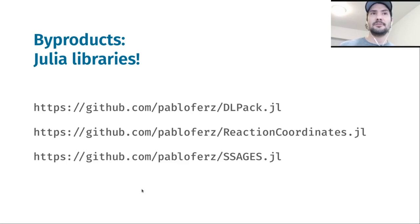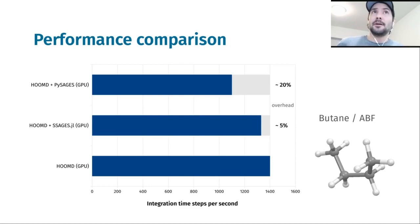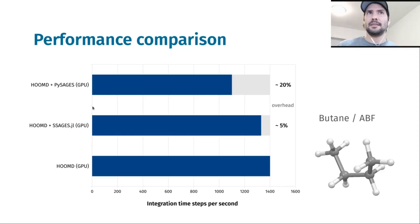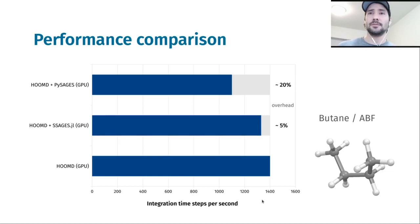Let me now talk a bit about the performance comparisons between the code developed with Python and JAX and the Julia implementation. When comparing the overhead that the enhanced sampling method causes, we get around a 5% overhead with the Julia implementation, whereas in Python it is around 20%. It's probably not surprising to anyone here, but it's still a nice example of how even JIT-compiled libraries in Python might not give you an easy way to get the most performance that you can sometimes achieve with Julia.